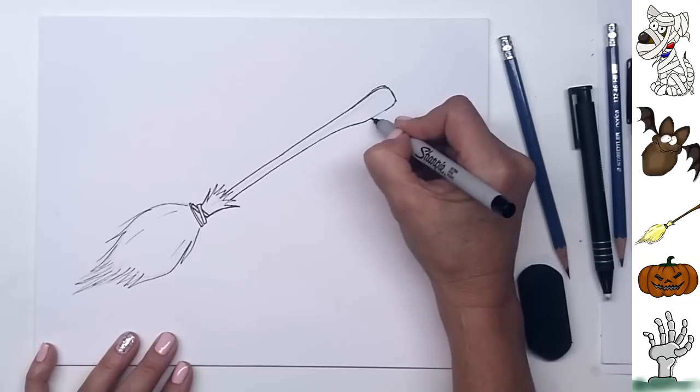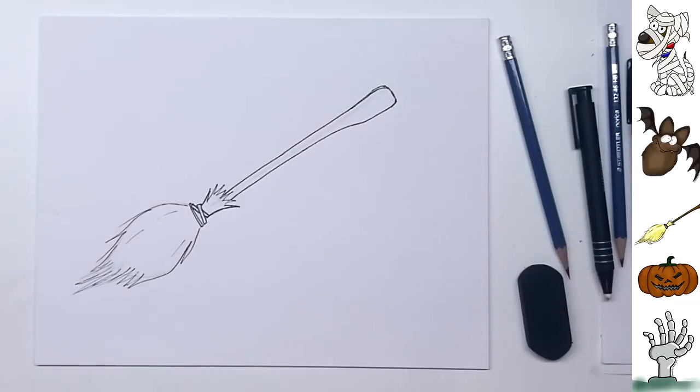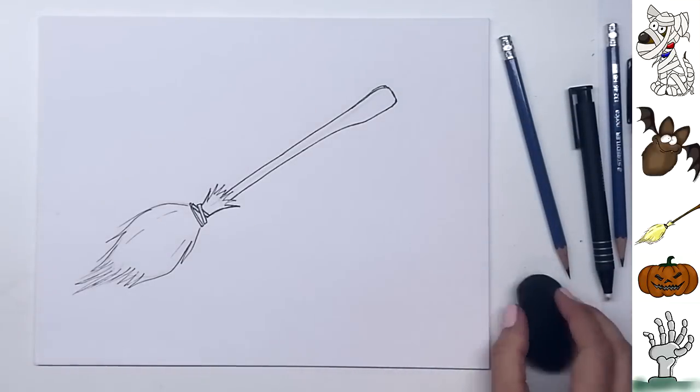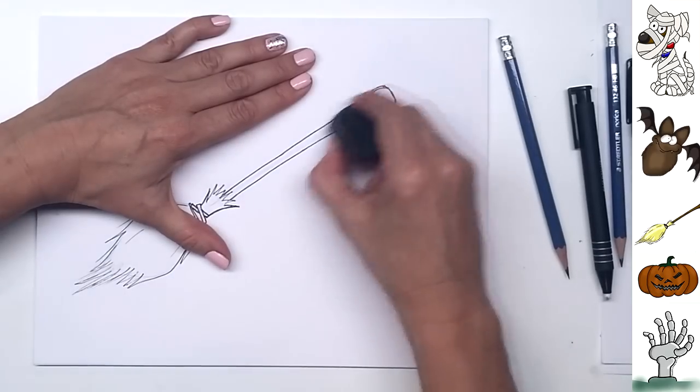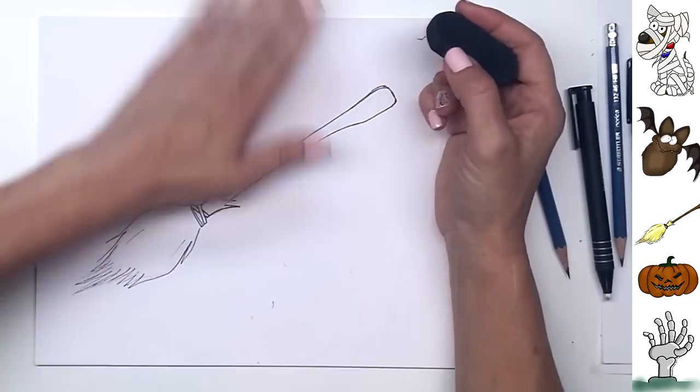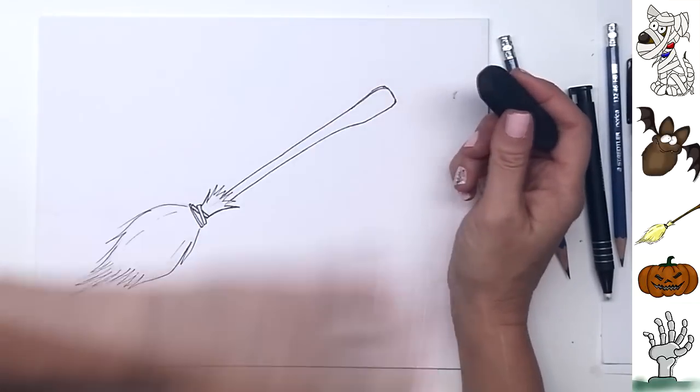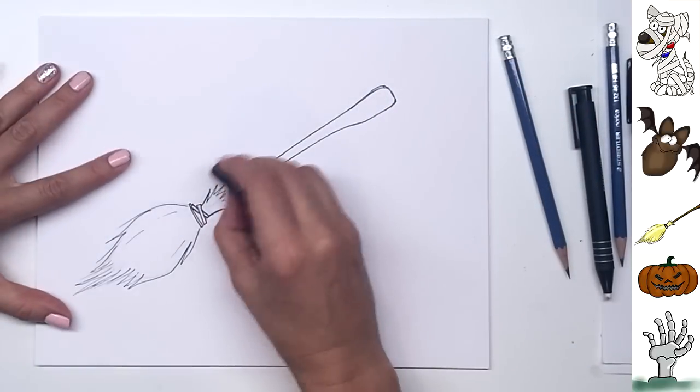But that's all there is to it. Now all you need to do is erase all the little sketch marks that are in behind. And color in your broom. So I'll color mine in Photoshop so it will match what you've seen in the intro screen.